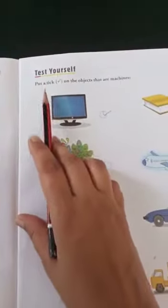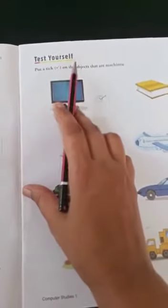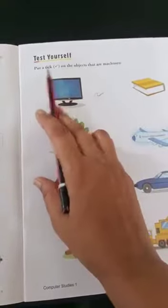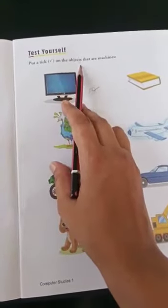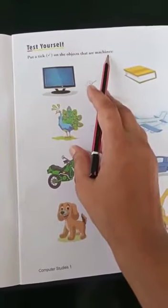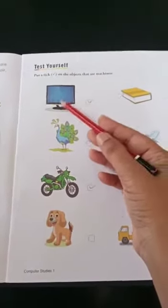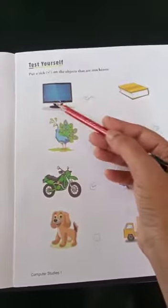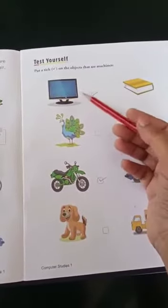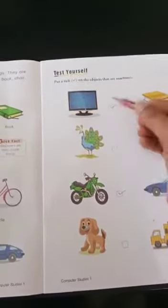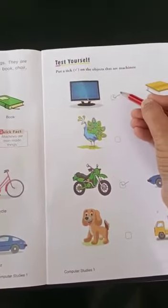What is written here? Put a tick on the objects that are machines. Now see first one. What is this? This is a television. Is it a machine? Yes, it is a machine. So put a tick mark here.